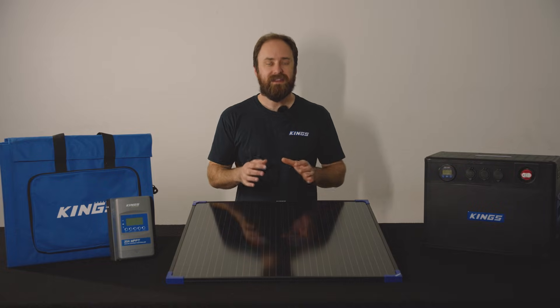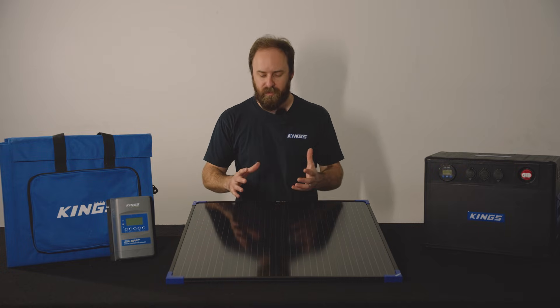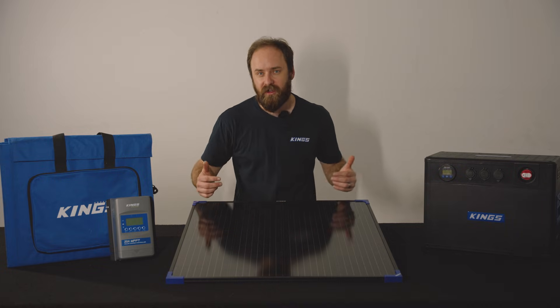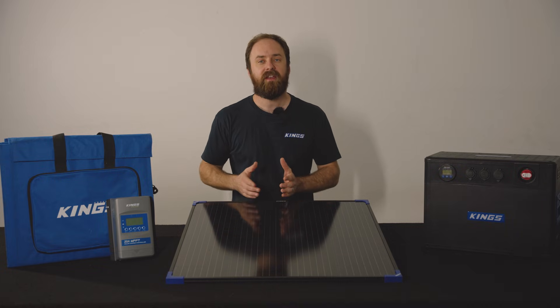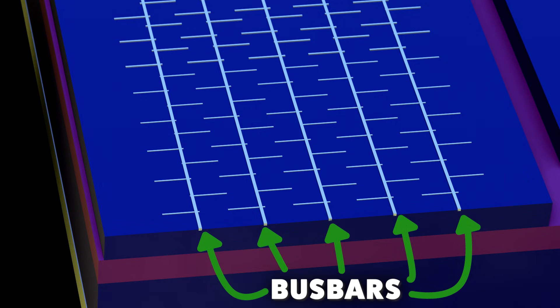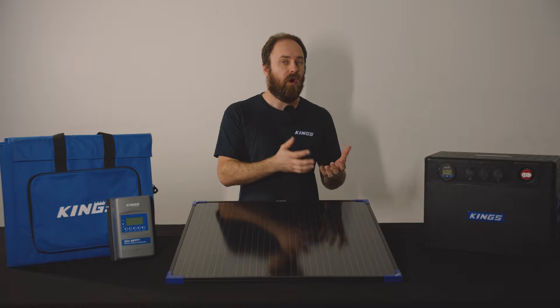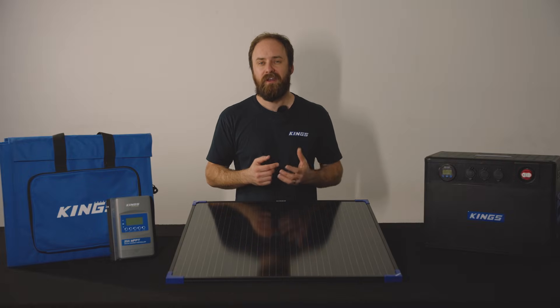The next thing to look at is the number of bus bars on the cell. Bus bars are the thicker silver lines on the solar panel that carry the current through your entire circuit. The more you have, the more the current is shared, leading to higher efficiencies and less voltage drop. Modern solar cells will have multiple bus bars — maybe five or even ten — which helps prevent loss of output if one is damaged or fractured. Older panels might only have two or three, so losing one means the others share a lot more current, leading to more voltage drop and less efficiency.